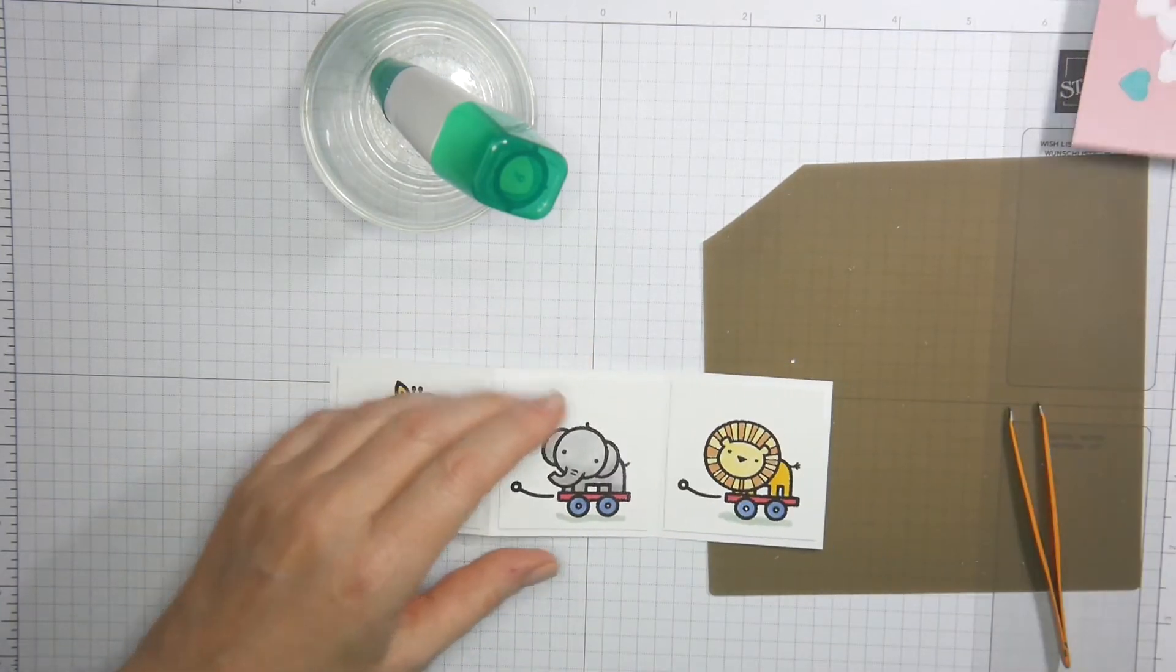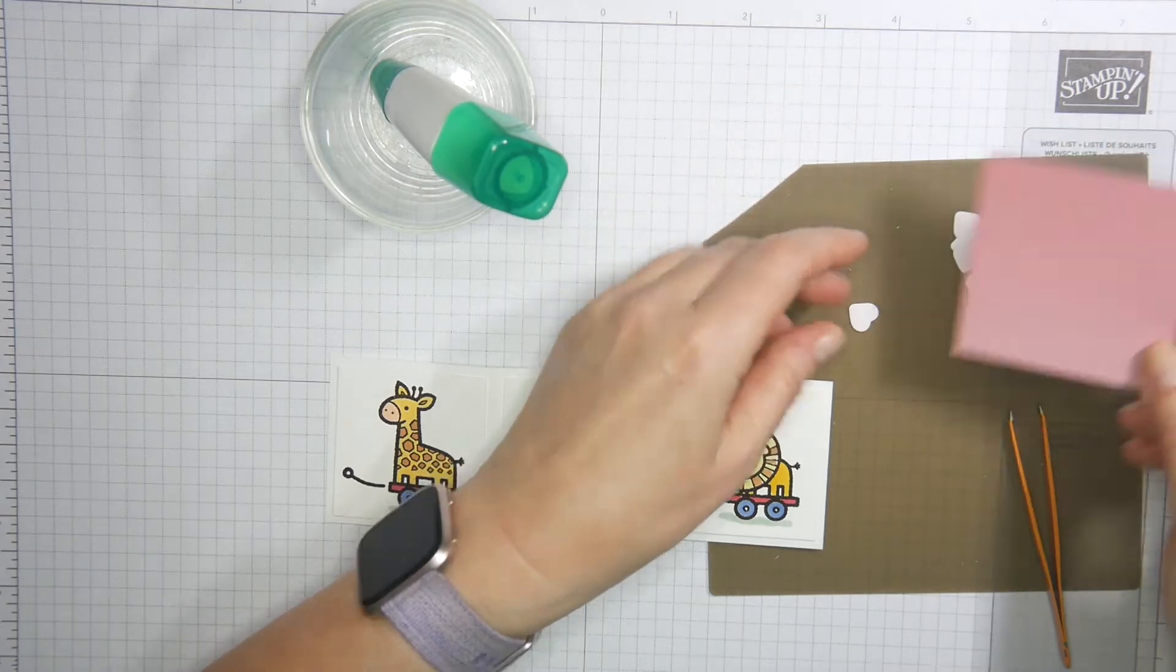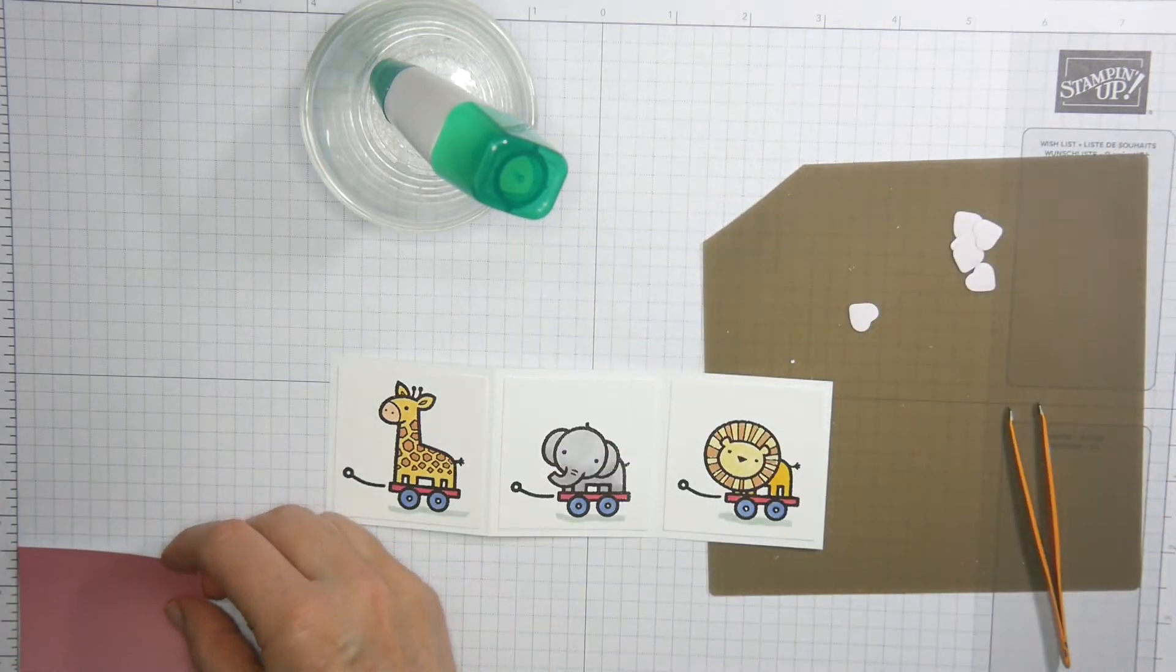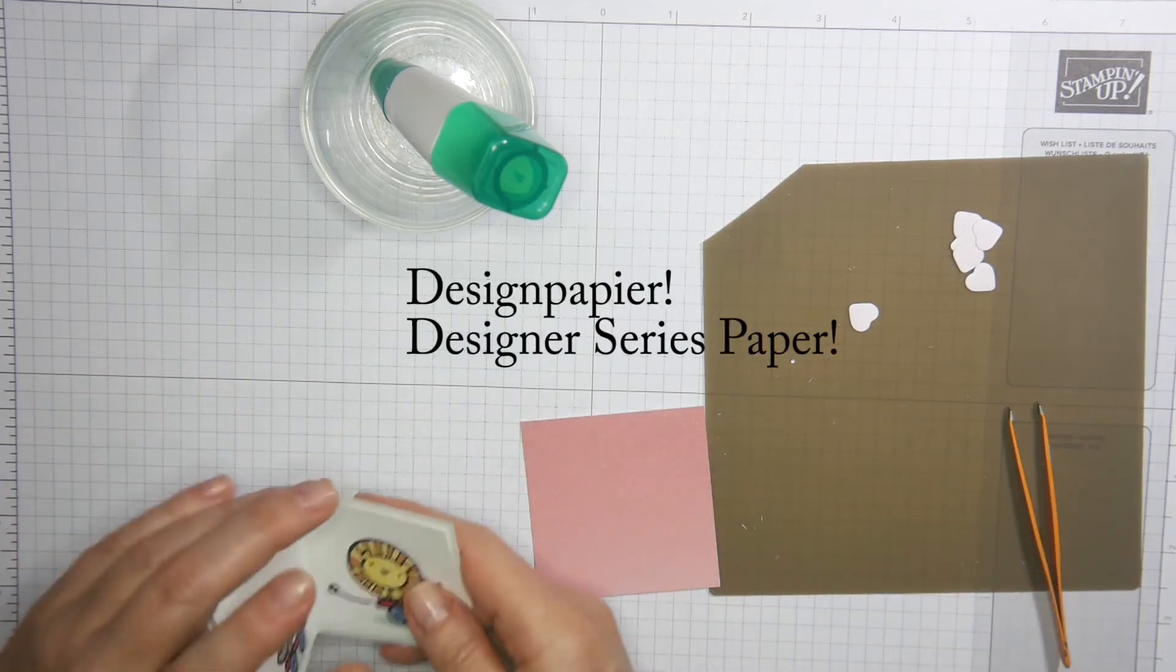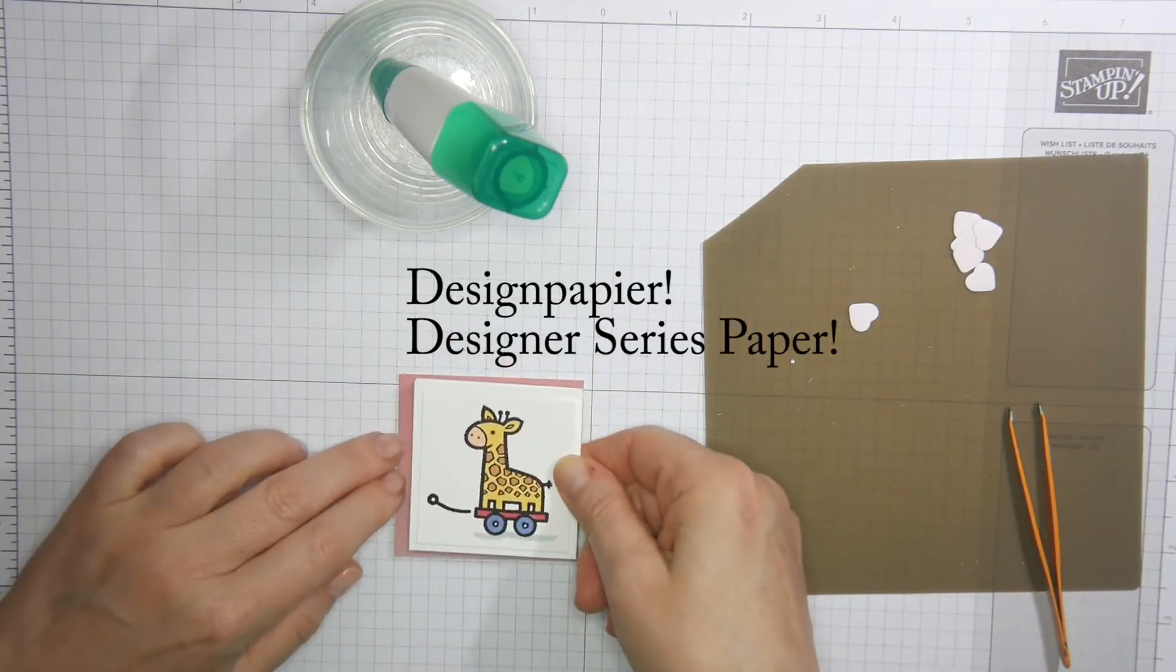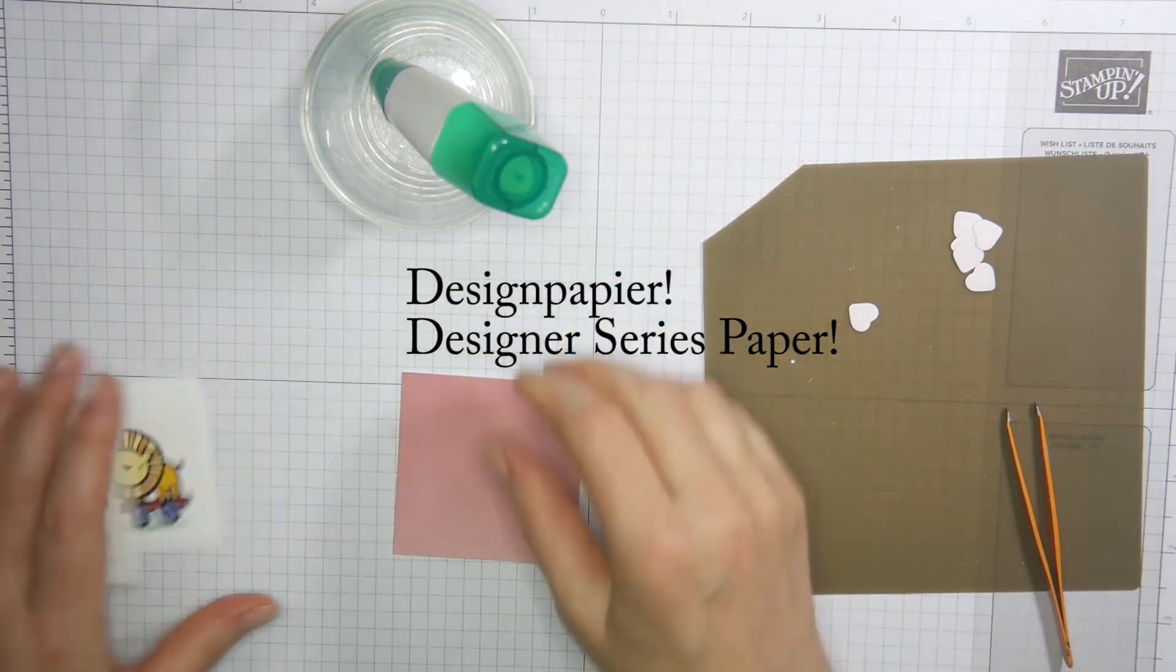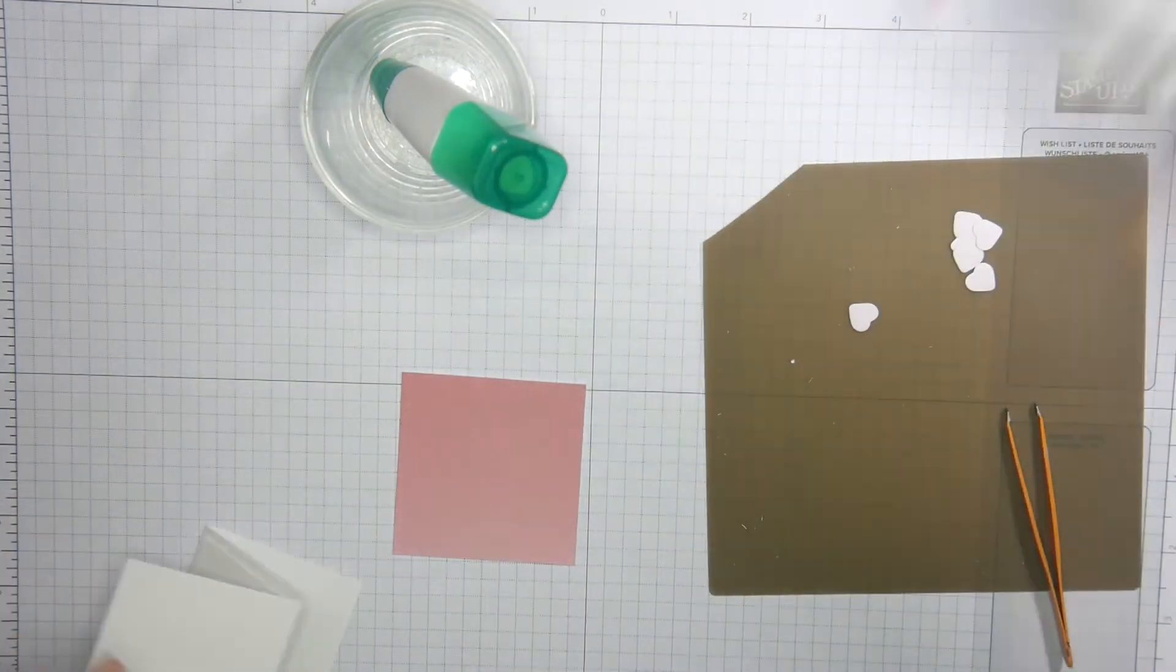Then I cut a piece of the cardstock which is 2 and 5/8 by 2 and 5/8. A bit on top of that one.